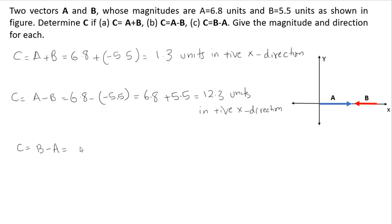But for the C part when the difference is opposite, it's B minus A. We know that B is minus 5.5 and minus 6.8 will give us minus 12.3 units. Now this negative shows that this vector will be in negative x direction.